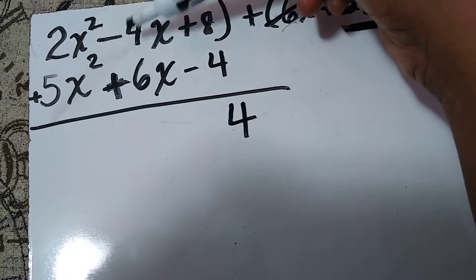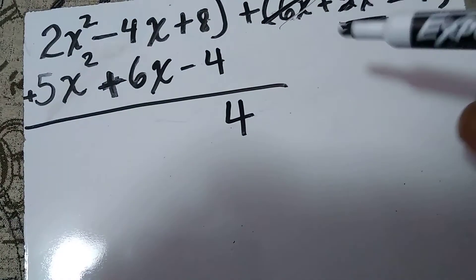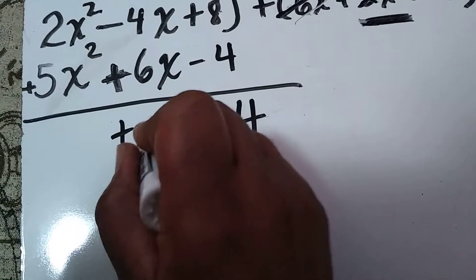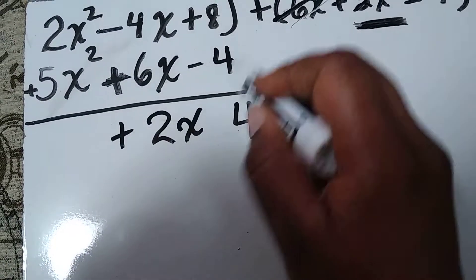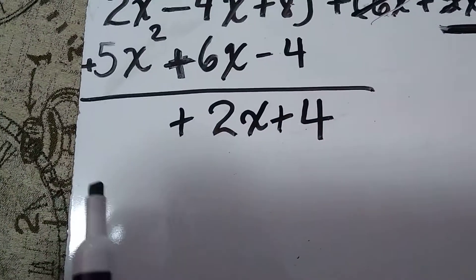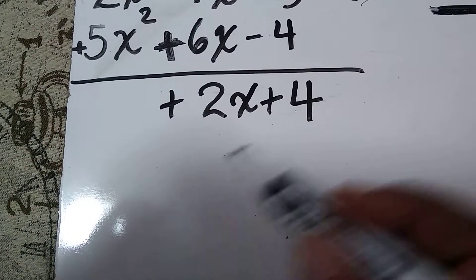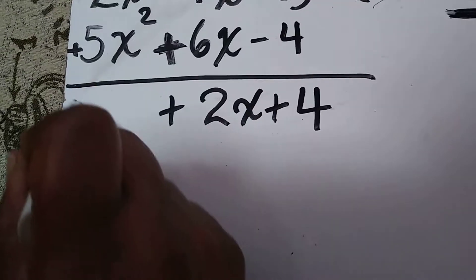I have a -4x plus a positive 6x, so you know my answer is going to be plus 2x. I'm sorry, there should be a plus right here in between the terms. Next, I have 2x² + 5x², which is going to give me 7x².